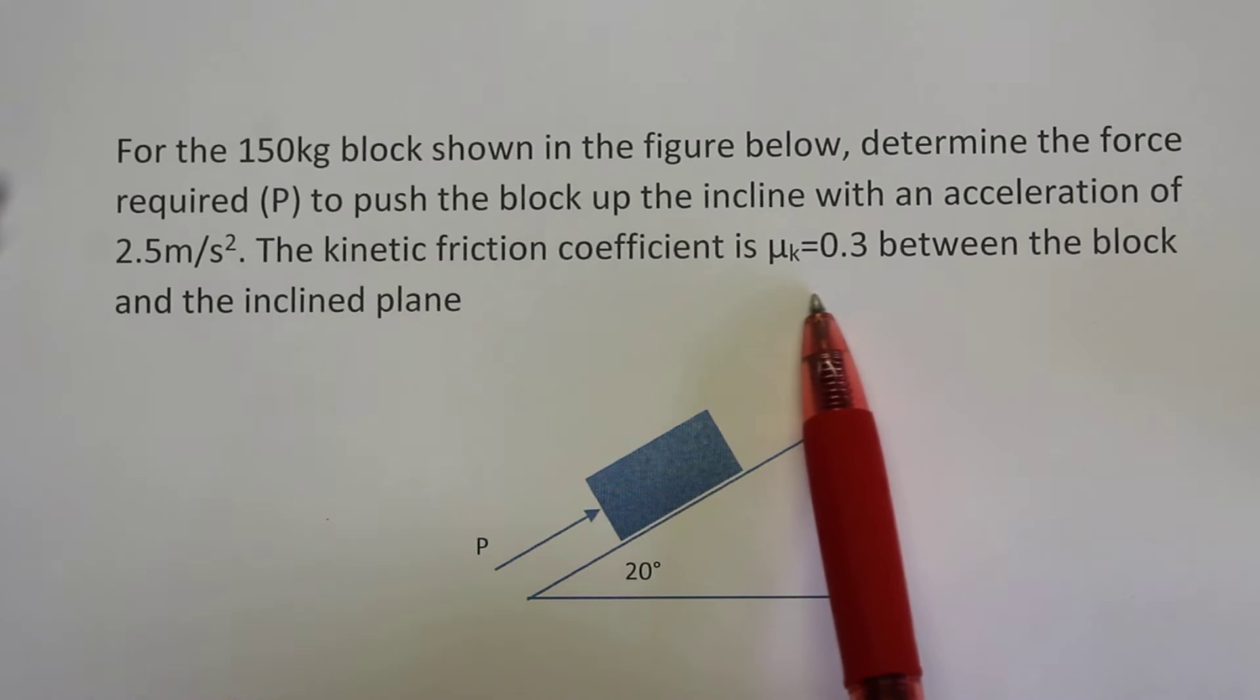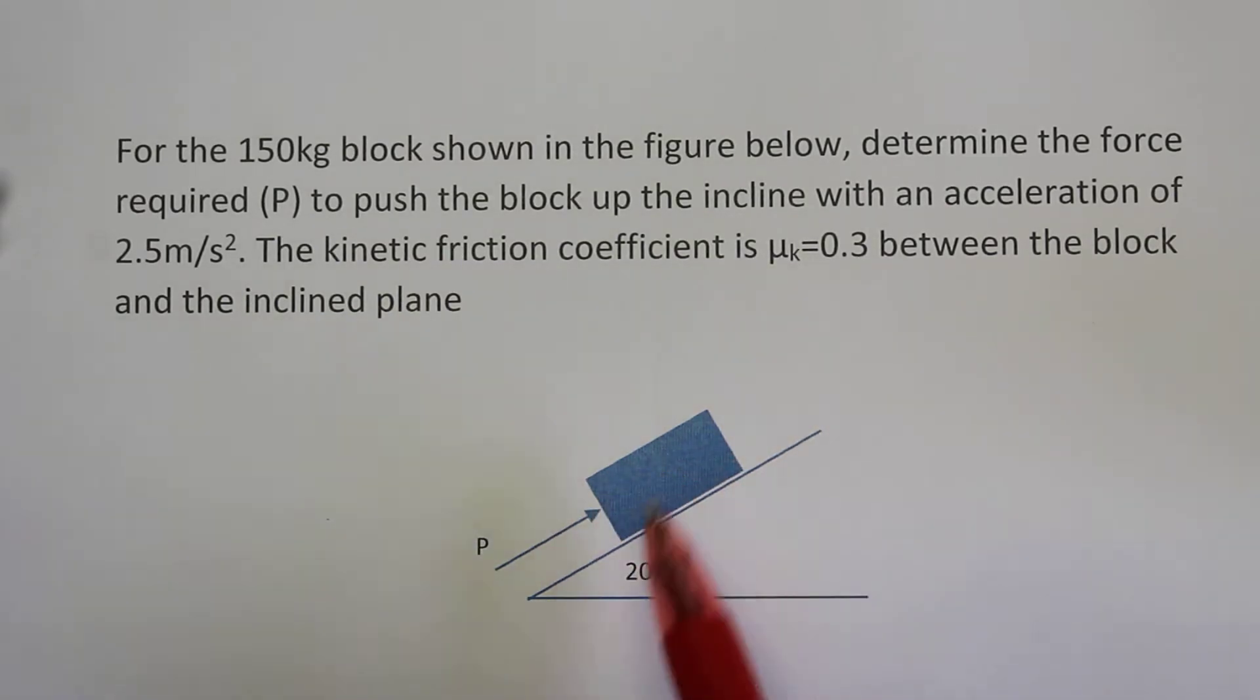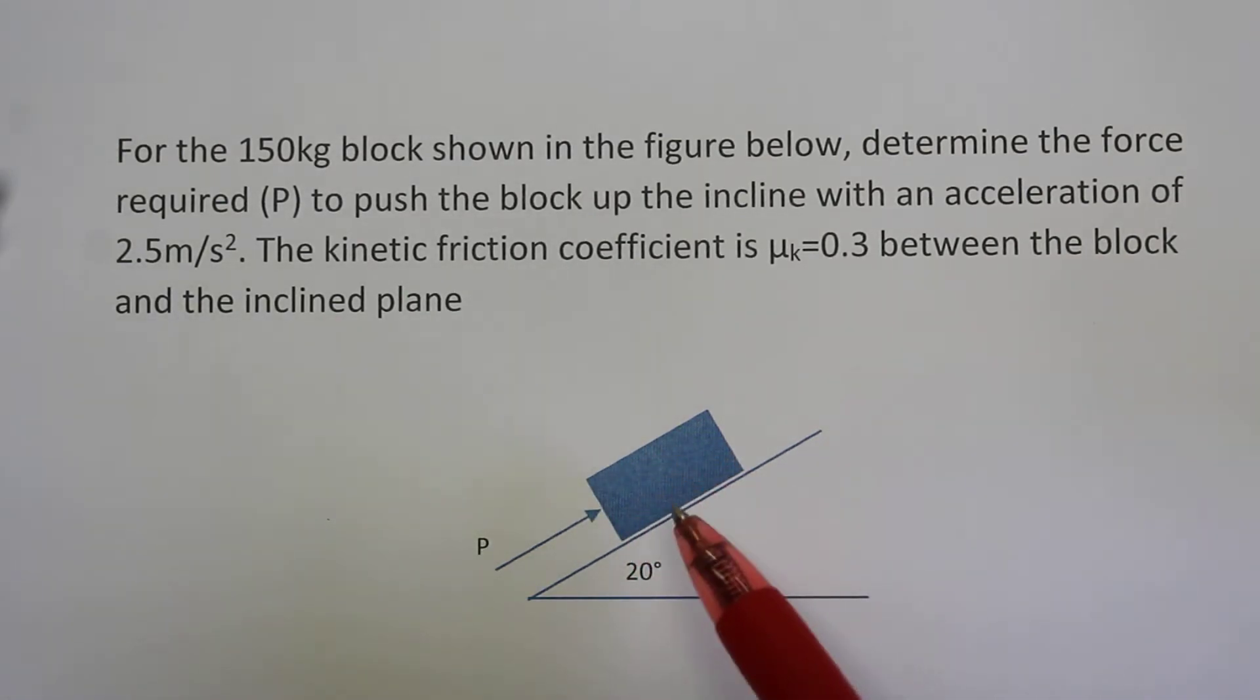The kinetic friction coefficient is mu k equal to 0.3 between the block and the inclined plane. In this example, we need to first draw the free body diagram.